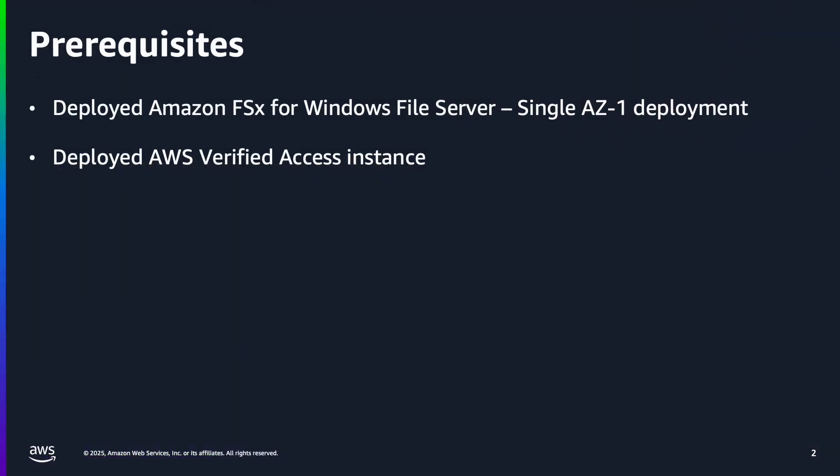There are some prerequisites for the rest of the video. If you are following along with hands-on keyboard, pause the video until you launch a single AZ-1 deployment of an Amazon FSx for Windows File Server and an AWS Verified Access instance. At the time of this video, AWS Verified Access only supports the single AZ-1 deployment of FSx for Windows File Server, so make sure it's a single AZ-1 deployment. Also, make sure you deploy FSx and AWS Verified Access in the same region.